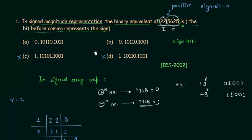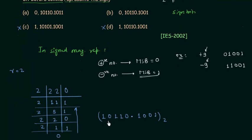The only thing left is to compare the magnitude. We already calculated the magnitude: 10110.1001. Option A has the decimal part 1011, which is not correct. Option B has the decimal part 1001, which matches. So option B is the correct answer for problem number 1.